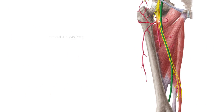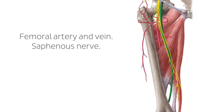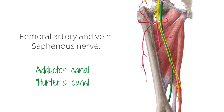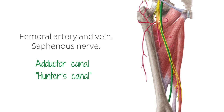Both the femoral artery and vein, as well as the saphenous nerve, proceed within a groove between the adductor magnus, adductor longus, and vastus medialis muscles. This so-called adductor canal, or Hunter's canal, is ventrally covered by the vastoadductorial membrane. Distally, it ends between the fleshy and tendinous insertion of the adductor magnus and leads to the popliteal fossa.